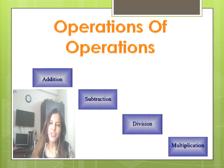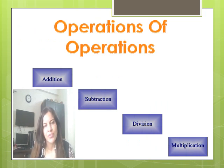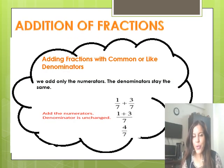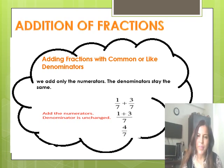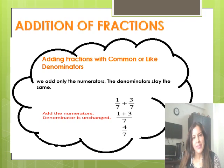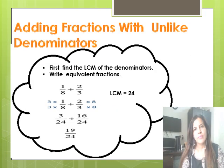The four basic operations you need to learn in fractions are addition, subtraction, multiplication, and division. Before moving on to multiplication and division, I'm going to recall addition and subtraction of fractions. For addition of like fractions, the simple rule is: add the numerators and the denominators remain the same. For example, 1 by 7 plus 3 by 7 — both are like fractions because the denominators are the same. So 1 plus 3 equals 4, and 7 remains 7, giving us 4 by 7.